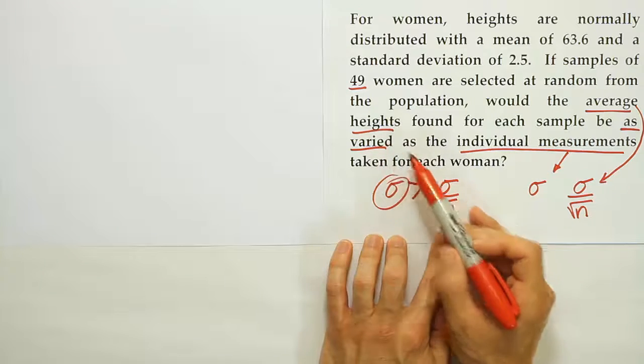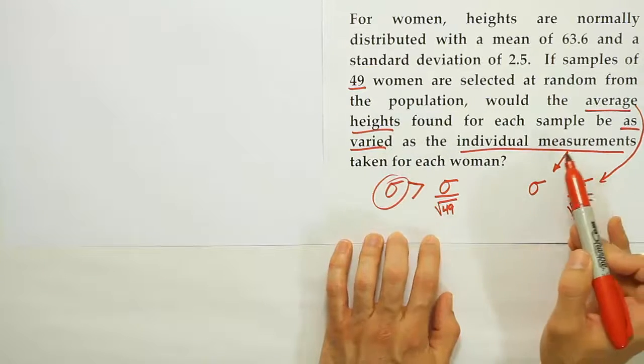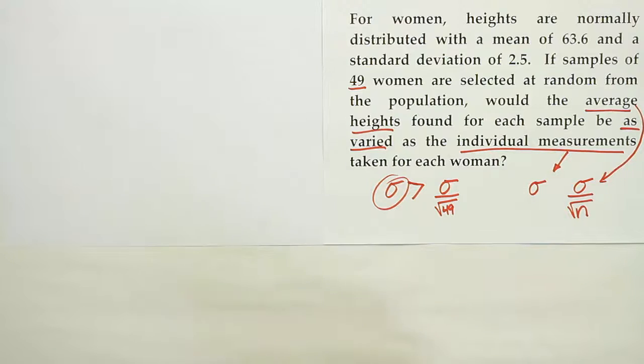The average heights would be much less varied than the individual measurements. So if you looked at a list of heights for a group of women, there would be lots of variation. There'd be some tall women, some short women, some average women, and there might be big differences between the female heights.